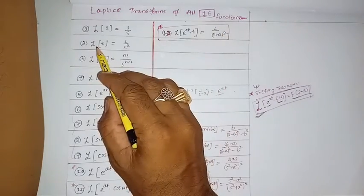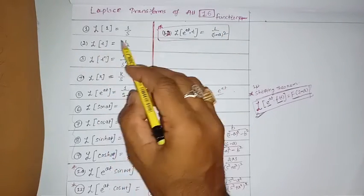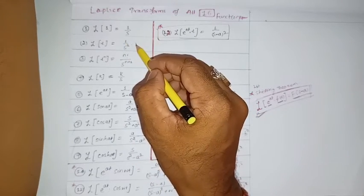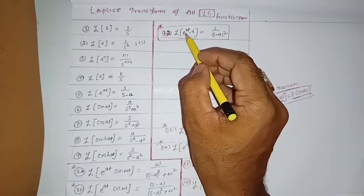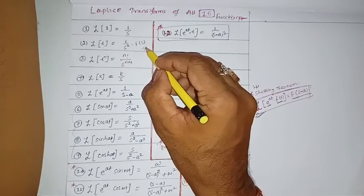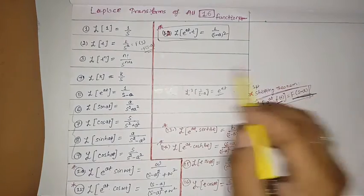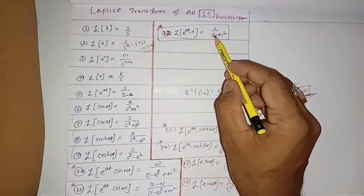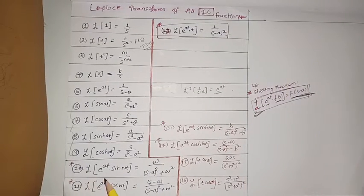The Laplace transform of t is 1/s². If we call this F(s), then multiplying by e^(at) gives F(s-a) according to the shifting theorem. So instead of s we write s-a, giving 1/(s-a)².